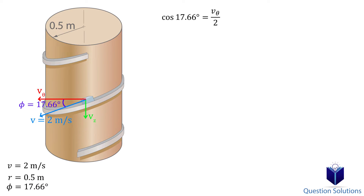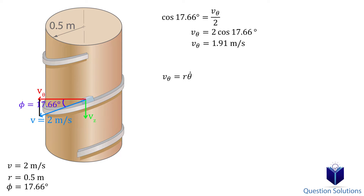Now we can figure out the transverse component value by using cosine, because this forms a right angle triangle. Then we can figure out the angular velocity by substituting the values we know and solving.